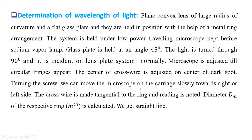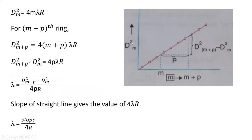So, friends, if you plot this diameter square D² for that ring versus m, and here m + p, we get a straight line graph. So, D²ₘ = 4mλR.